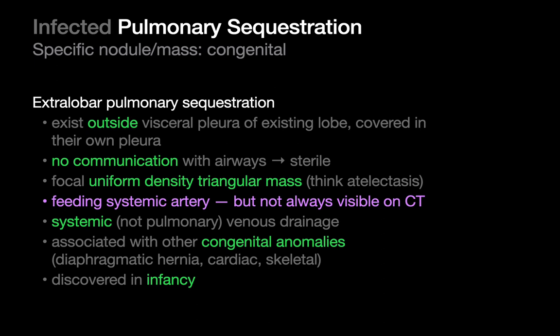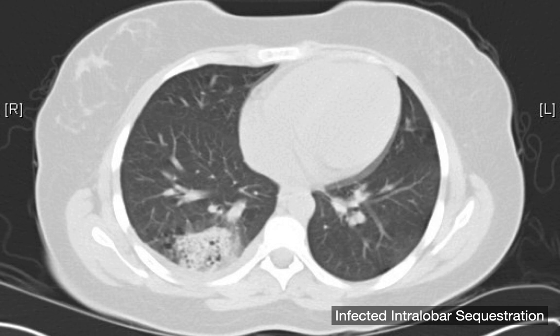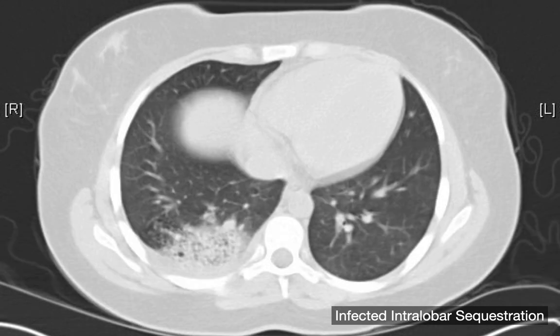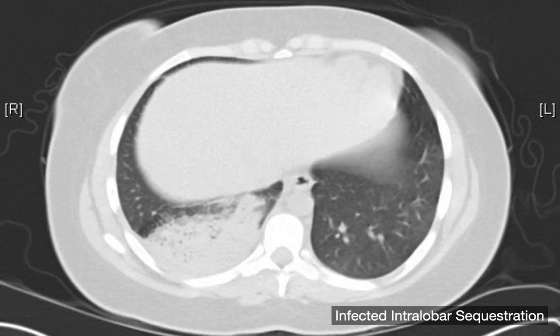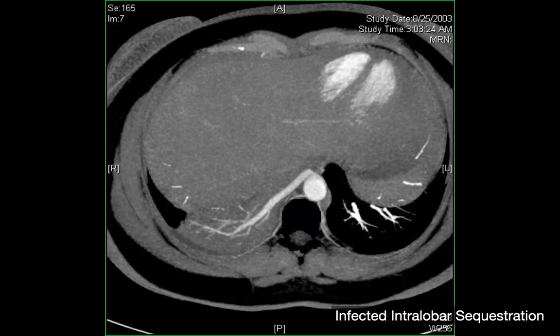Their natural history is a little different than intralobar sequestrations — extralobar sequestrations tend to be associated with congenital anomalies more often, and as a consequence may be discovered in infancy. Here's an example of an infected intralobar sequestration. It looks like a mass, but there's a bubbly texture associated with it, kind of like a dish sponge, which is highly unusual. On soft tissue windows, we can actually see a blood vessel feeding this lung mass supplied from the descending thoracic aorta — highly specific for an intralobar sequestration.